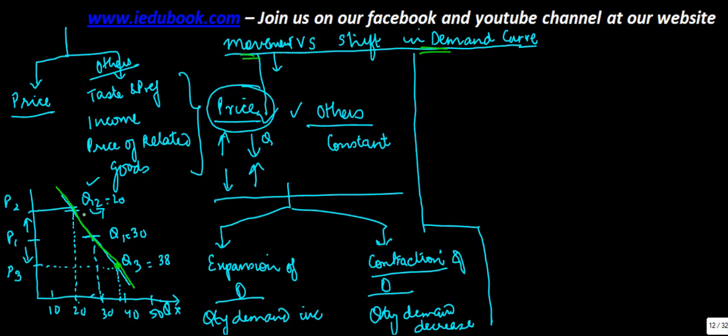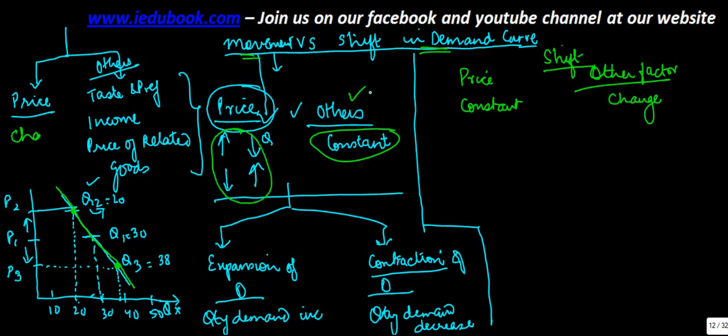The second is the shift in the demand curve. Now a shift in the demand curve happens when price remains constant and other factors change. In this case, the price was changing, increasing or decreasing, other factors were constant. In this case, it's a reverse.